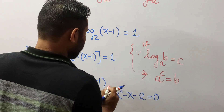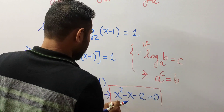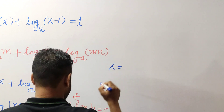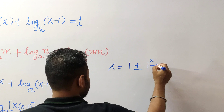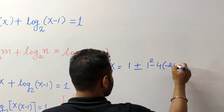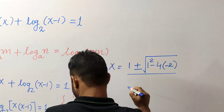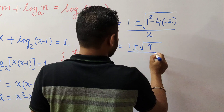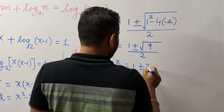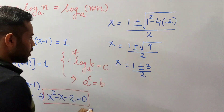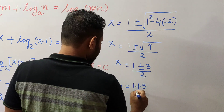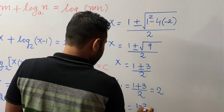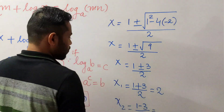We have one quadratic equation here. Let's solve this quadratic equation using the formula. So x equals 1 plus or minus the square root of 1 squared minus 4 times 1 times negative 2, all over 2 times 1. This simplifies to 1 plus or minus 3 over 2, giving two roots. The first value is 1 plus 3 over 2, which equals 2. The other root is 1 minus 3 over 2, which equals minus 1.